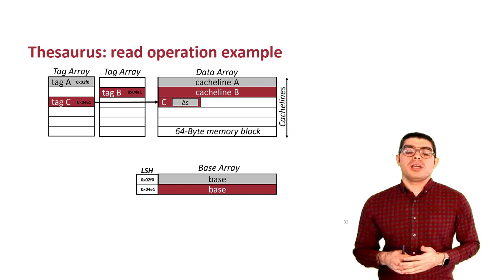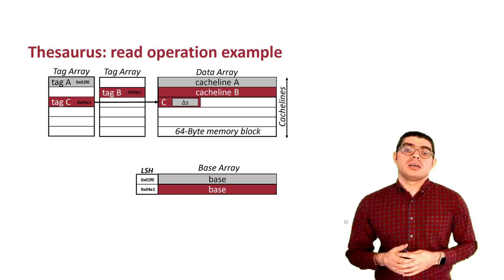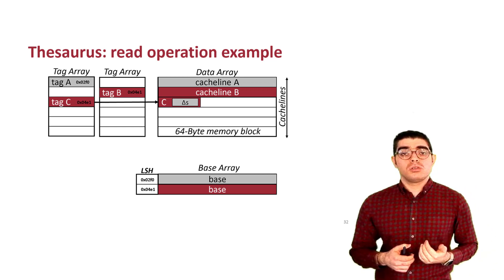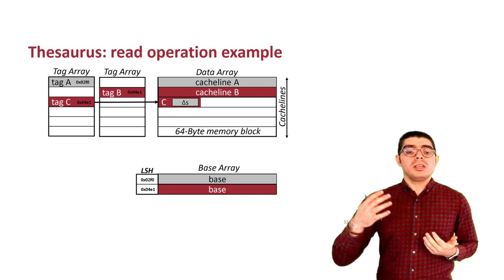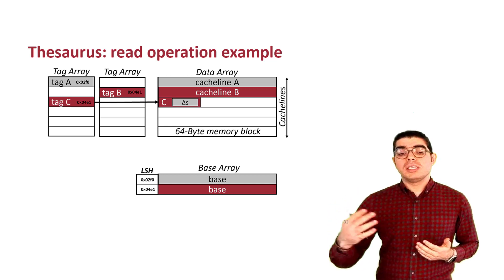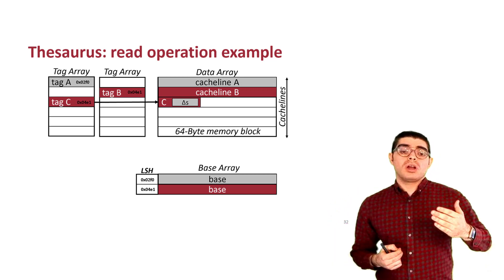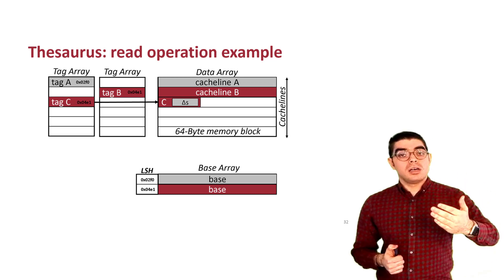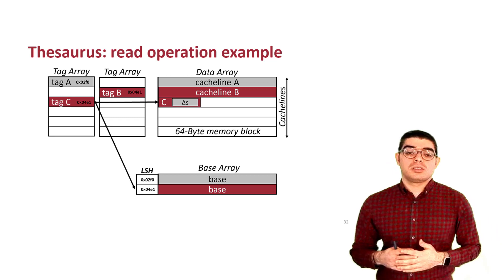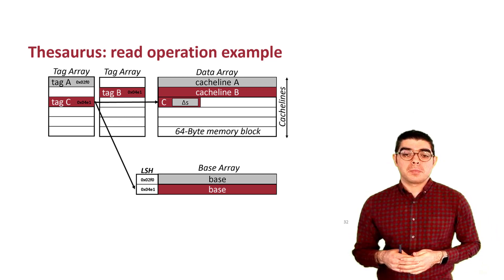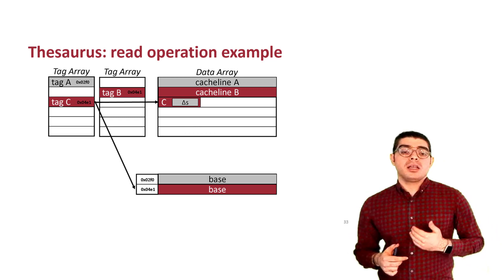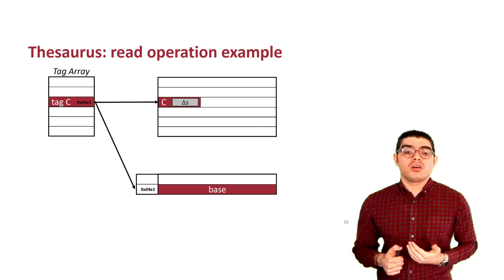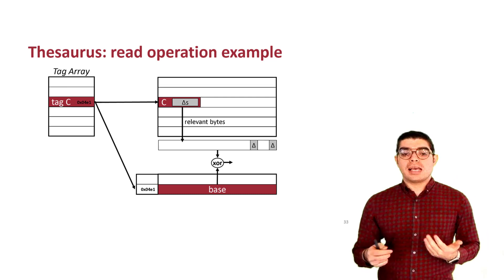Now let's look at how a read operation for a compressed data line works. We locate where the tag is stored — the tag not only points to the data entry in the data array, but because we store the LSH fingerprint with the tag, it can also locate where the base is stored in the base array. It is then sufficient to combine the base with the relevant bytes of the compressed format to reconstruct cache line C.